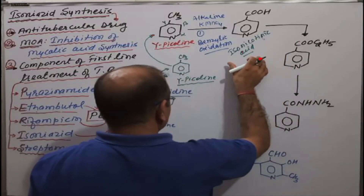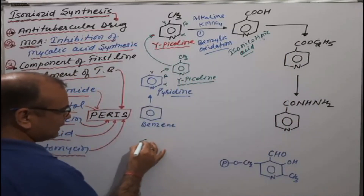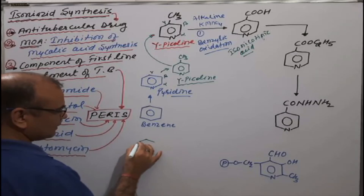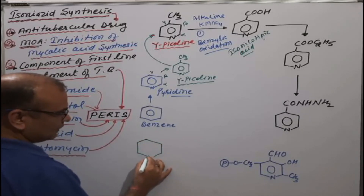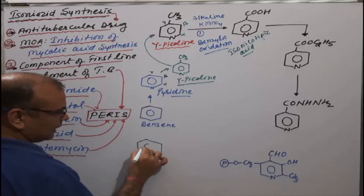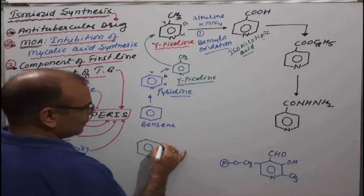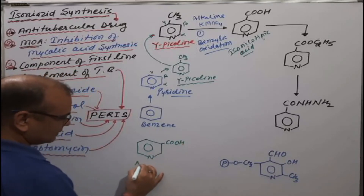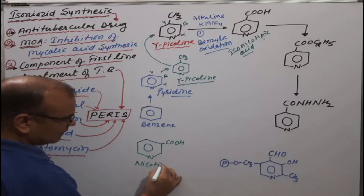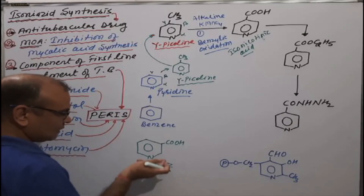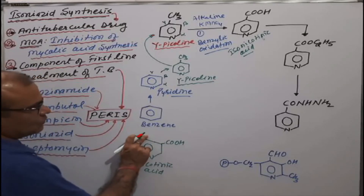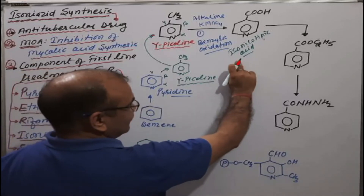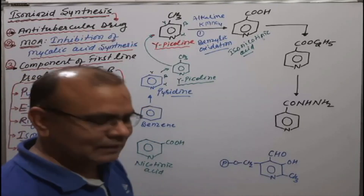This product is isonicotinic acid. As discussed in the classification of pyridine ring systems: if the carboxylic group is present at the meta position it is nicotinic acid, and if it is shifted to the para position it is known as isonicotinic acid.